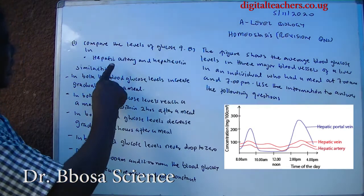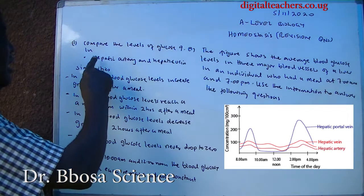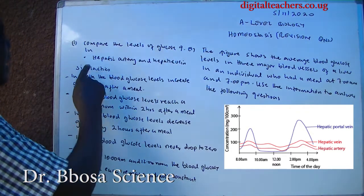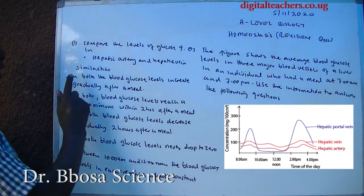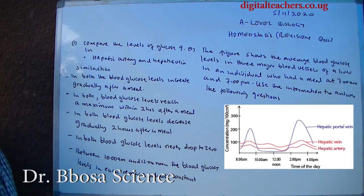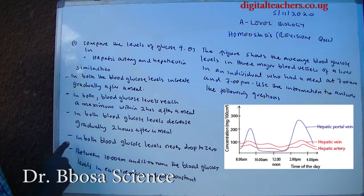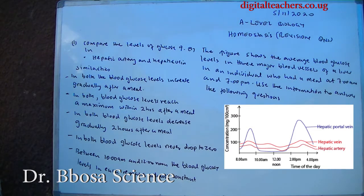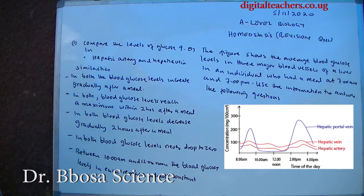Question 1: compare the levels of glucose in the hepatic artery and the hepatic vein. Similarities: in both, blood glucose levels increase gradually after a meal. In both, blood glucose levels reach a maximum within two hours after a meal. In both, blood glucose levels decrease gradually after two hours. In both, blood glucose levels never drop to zero. Between 10 a.m. and 12 noon blood glucose levels in each remain almost constant.